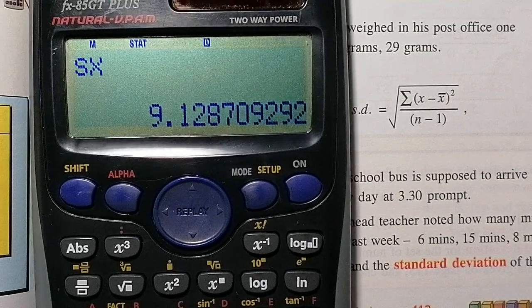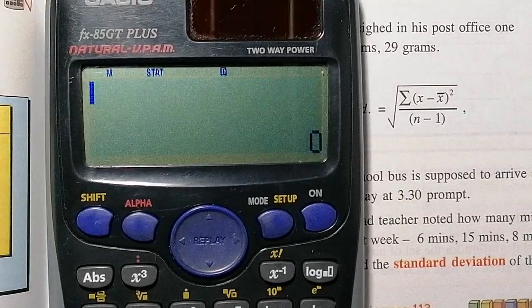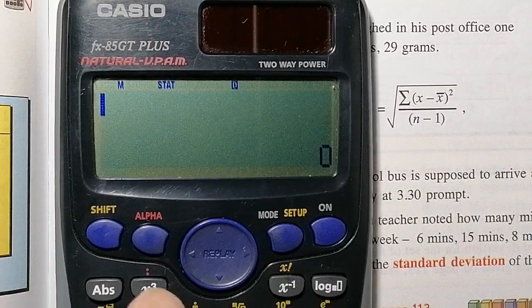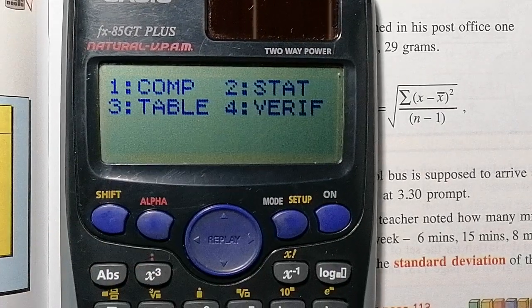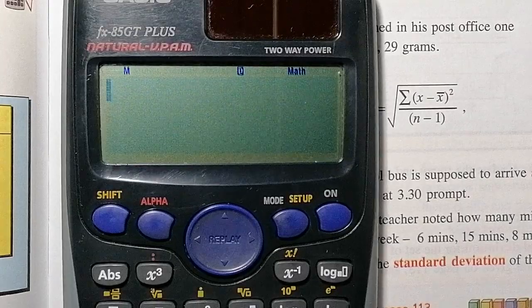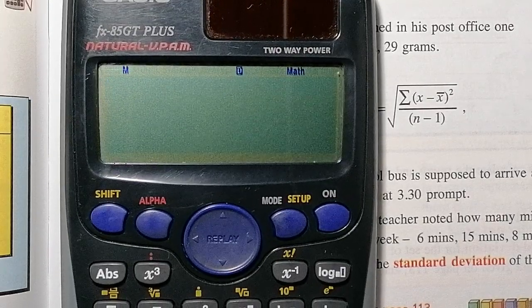Right. So to finish off, I'm just going to press the AC button to cancel out. And to get rid of that stat function that's there, I'm going to press my mode button and then the comp button. So number one, that's my back at the start. So I can then go ahead and do some further calculations.